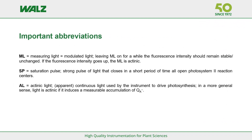There are several abbreviations that will regularly appear in this tutorial. ML is measuring light: low-intensity modulated light that has little or no effect on the redox state of Photosystem II. SP is saturation pulse: a strong pulse of light that closes all open reaction centers in a short period of time. AL is actinic light, perceived by the detector as continuous light and used by the instrument to drive photosynthesis. Light is actinic if it induces a measurable accumulation of the Photosystem II reaction factor Qa-.